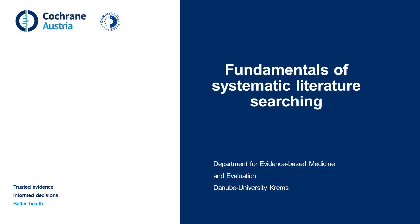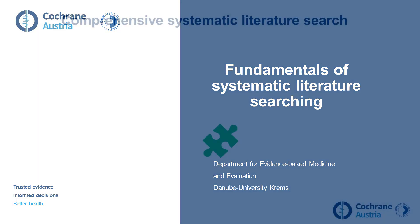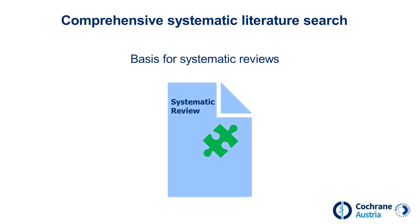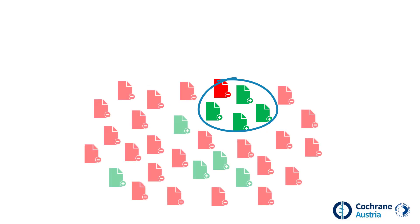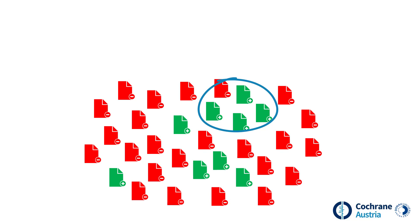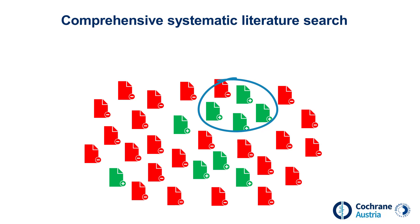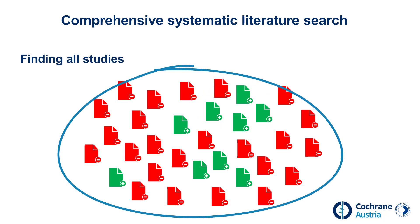This video introduces a particular way of searching for literature: systematic searching. A systematic literature search is the basis of systematic reviews. Non-systematic reviews attempt to answer a research question based on a few selected studies. This approach often doesn't take into account the entire evidence base, which can distort the conclusions of the review. The aim of a systematic search is, therefore, to find as many relevant studies as possible on a topic. Only in this way is an objective assessment of a research question possible.